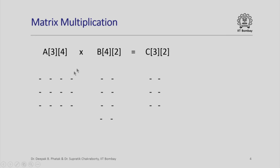First, you will remember that matrix multiplication is actually a slightly involved process. Here is an example of a 3 by 4 matrix A which is to be multiplied by another matrix B which is 4 by 2. These matrices are called multiplication compatible matrices when the number of columns in the first matrix equals the number of rows in the second matrix. The resultant matrix has the same number of rows as the first matrix and the same number of columns as the second matrix.